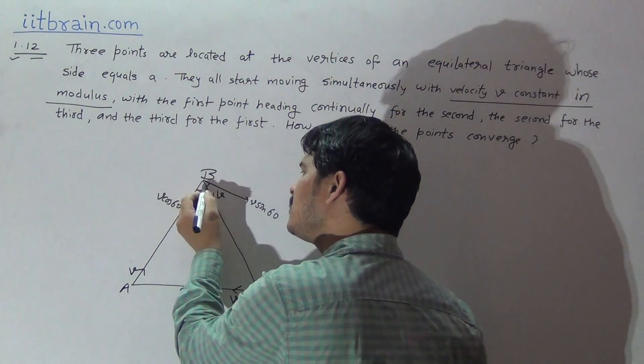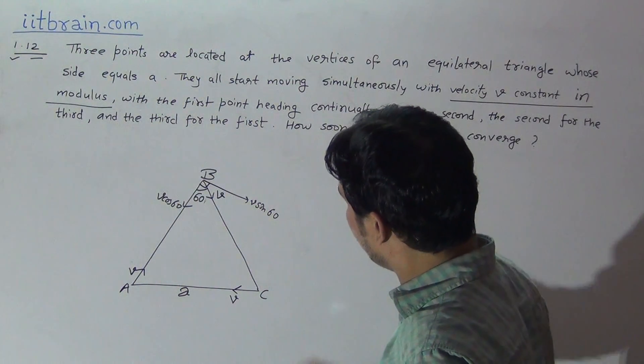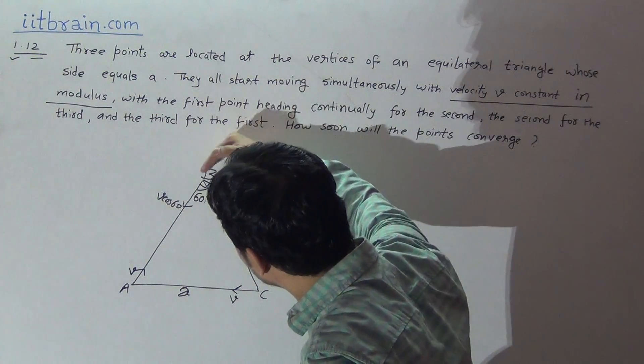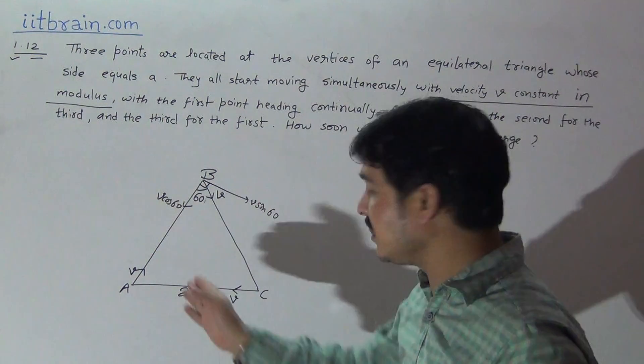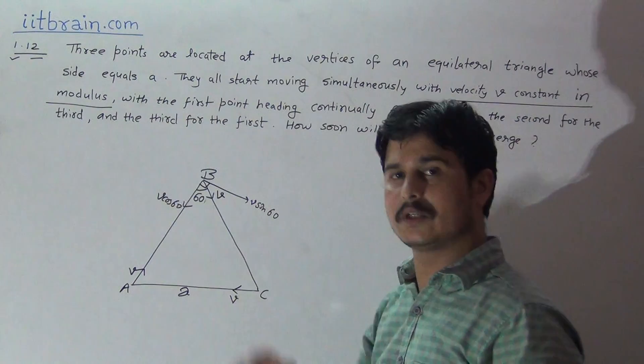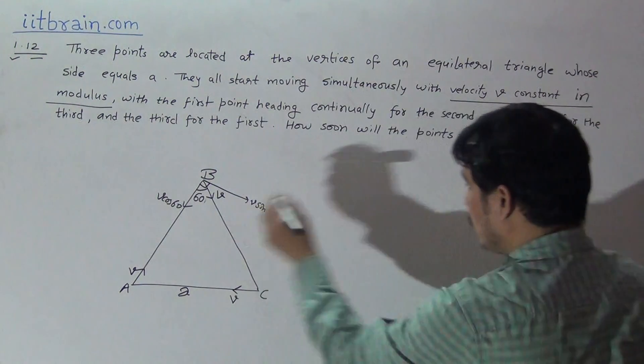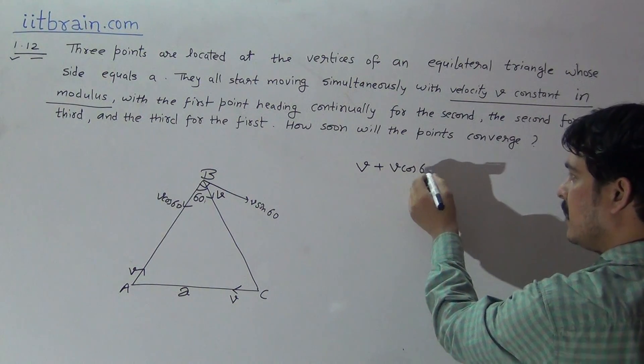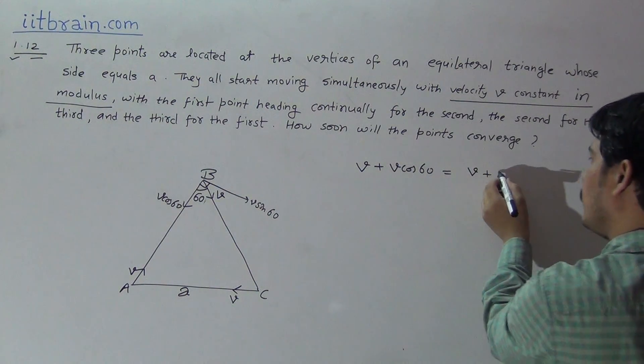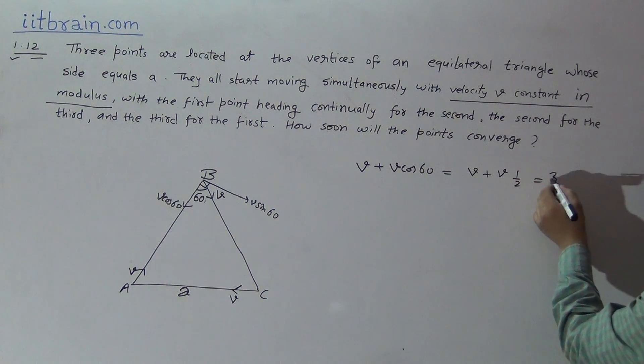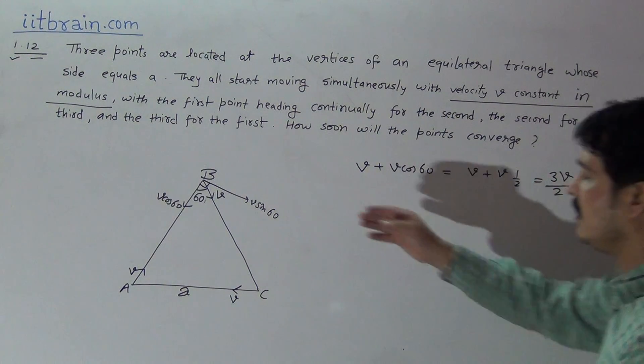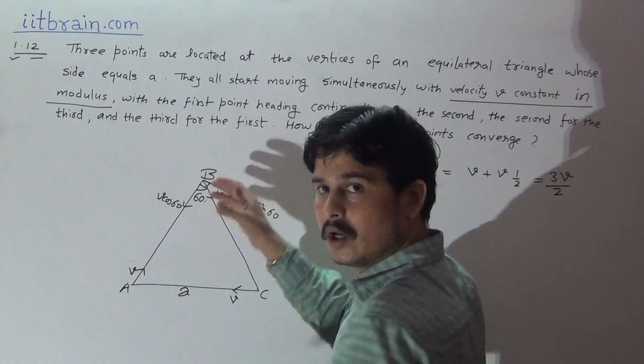It means the particle at point B moves with velocity V cos 60 towards A, and A is moving with V velocity towards B. So relatively, both are coming together with resultant velocity V plus V cos 60. It means their nearliness will be generated due to the net velocity 3V by 2.